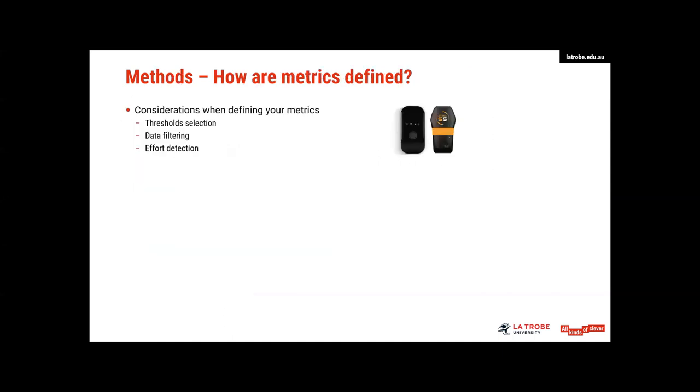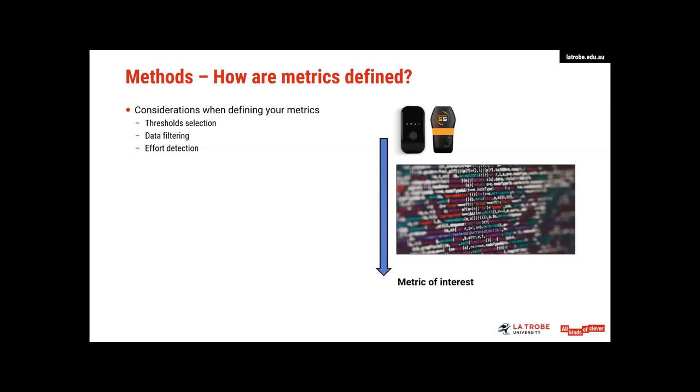So the second part of my talk is really on how these metrics are defined. Why do I think this is so important? Well, we get our devices, you can see our GPS there, and pretty much we analyse it in some way, whether we use manufacturer software, or we export the data ourselves and analyse it in a whole range of different programs and platforms. And then we have our metric of interest. What are some of the considerations that we need to account for when we're defining these metrics? I think there's really three main ones. Threshold selection, data filtering and effort detection. Now, I'm not actually going to talk about threshold selection in this talk today. I think a lot of others will cover it over the course of this webinar. But I really want to focus on data filtering and effort detection because they do seem to get the least attention across practitioners and researchers.